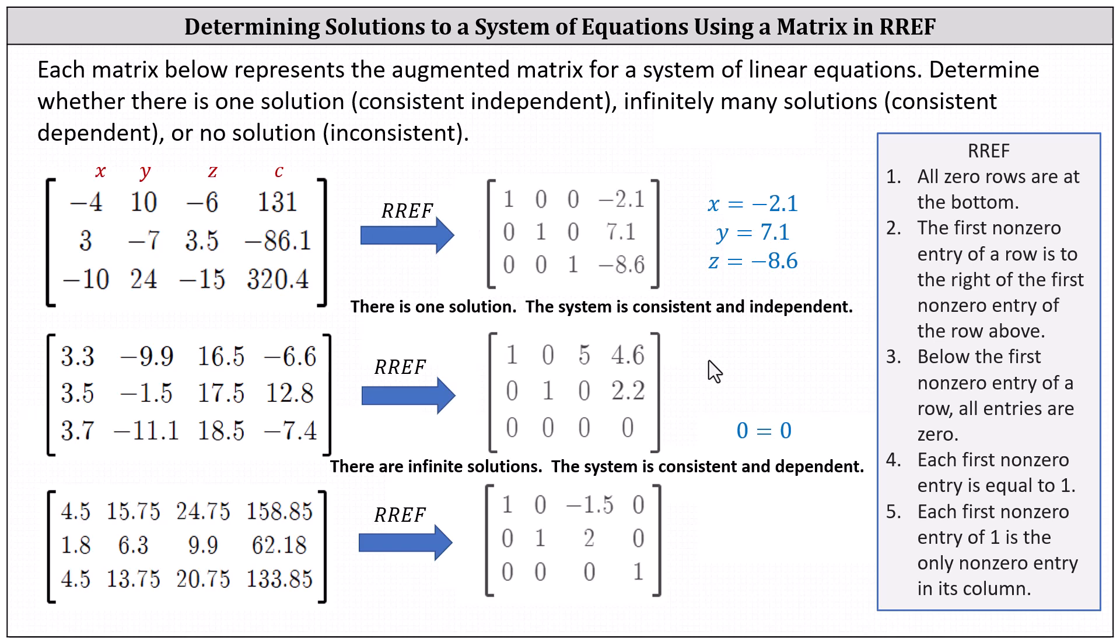And then finally, let's look at the last augmented matrix in reduced row echelon form. And again, let's focus on this last row. We have zero, zero, zero, one, which as an equation would be zero equals one. We know zero equals one is not true. This indicates the system has no solution, and we can classify the system as inconsistent.